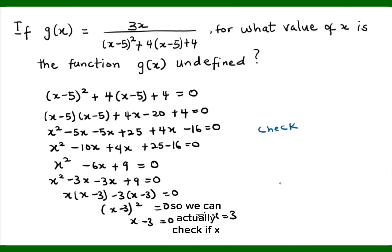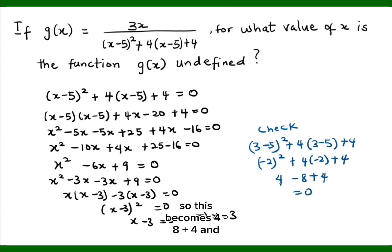So we can actually check if x equals 3 satisfies our claim. So substitute x equals 3 in the denominator. So we have 3 minus 5 all squared plus 4 bracket 3 minus 5 plus 4. So we have minus 2 squared plus 4 bracket minus 2 plus 4. So this becomes 4 minus 8 plus 4, and so we have 0.